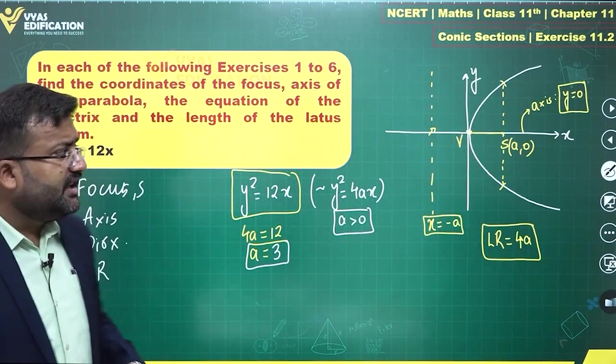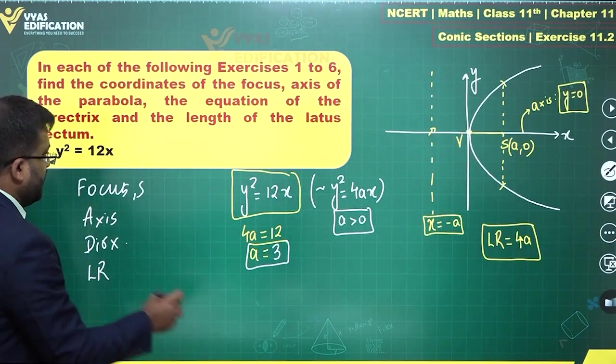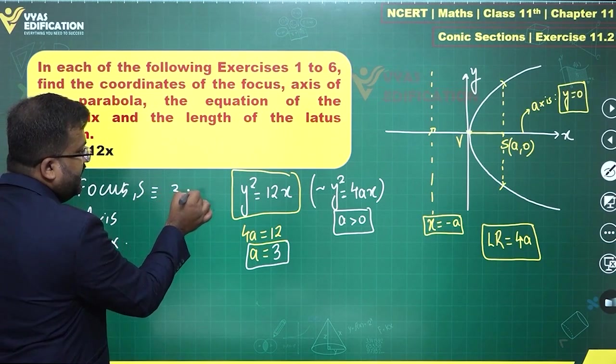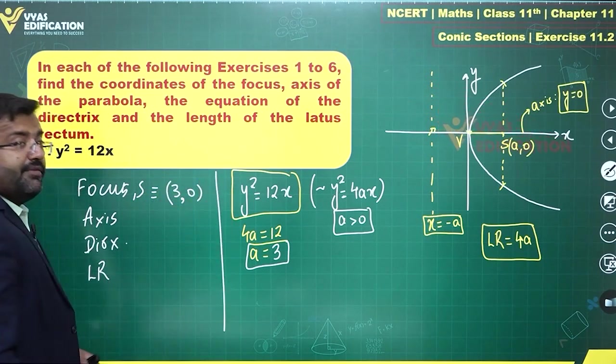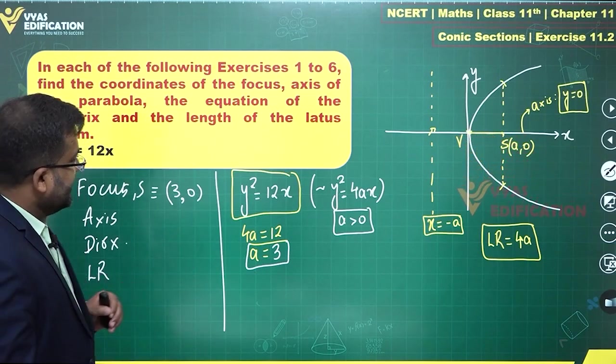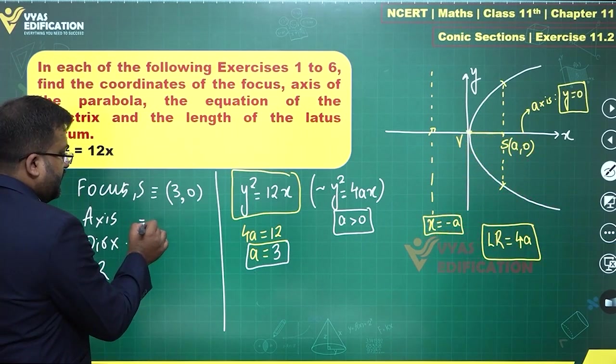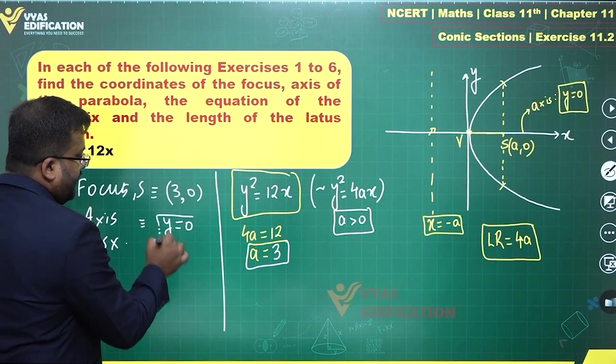Once you have observed a = 3, can you say that focus will be simply (a, 0). Focus, which is (a, 0) will be simply (3, 0) over here. Axis is Y = 0 which will also be Y = 0 over here.